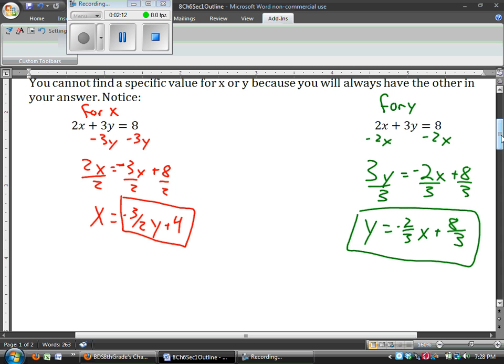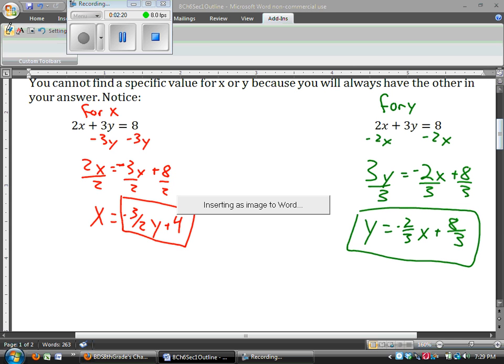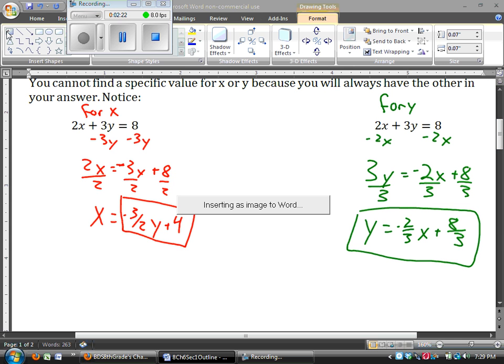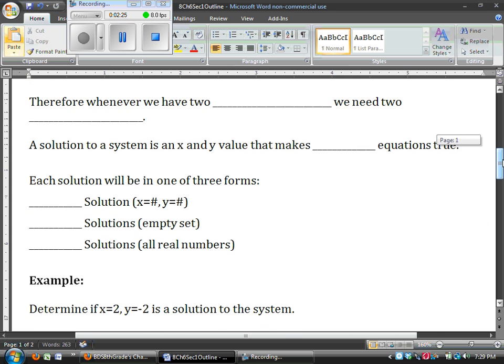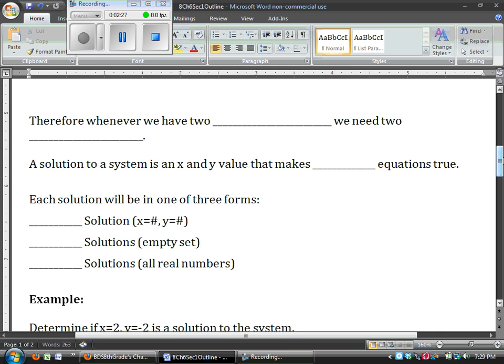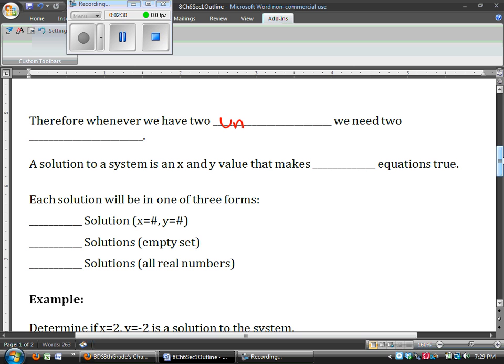So what we need to do is, whenever we have two unknowns, we need to have two equations. That's what we see here. When we have two unknowns, we need two equations.